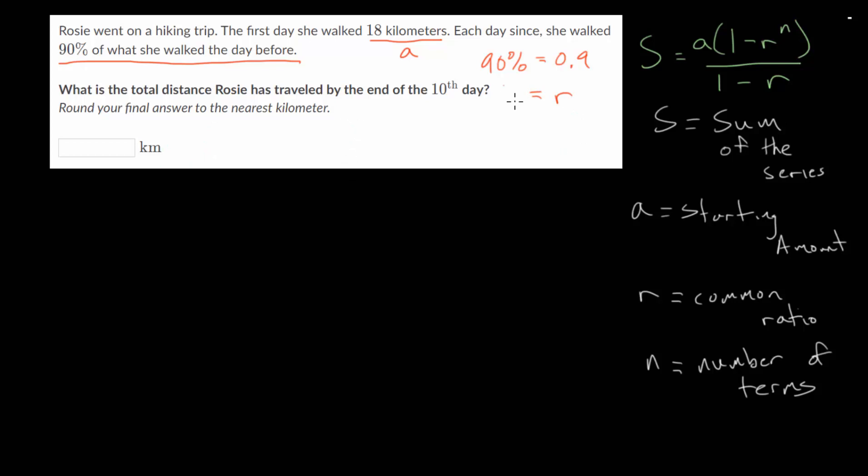That's what we'll be multiplying by to go from one term to the next. And what is the total distance Rosie has traveled by the end of the 10th day? So that's our number of terms, n is equal to 10 in this case. And we need to round our final answer to the nearest kilometer.